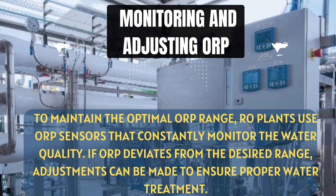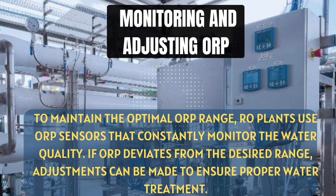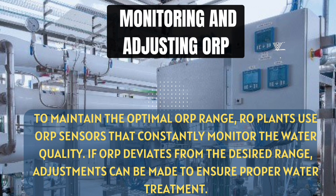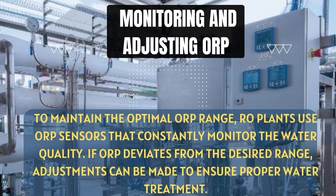Monitoring and Adjusting ORP: To maintain the optimal ORP range, RO plants use ORP sensors that constantly monitor the water quality. If ORP deviates from the desired range, adjustments can be made to ensure proper water treatment.